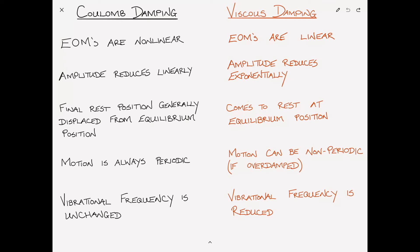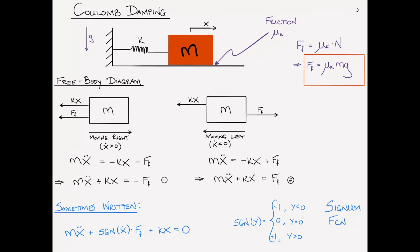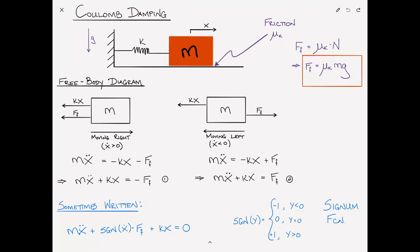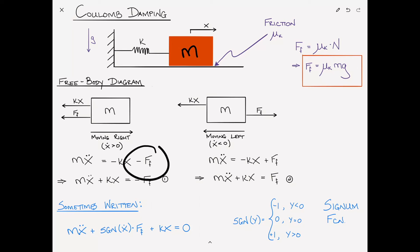I realize I've thrown a lot of information at you pretty quickly, but it's all there in the video. To summarize what we've done: we decided that with Coulomb damping we needed to treat the cases separately for when the block was moving left and moving right, and we found that the Coulomb damping effect came into the equation of motion as a force rather than as a damping term, as in viscous damping.